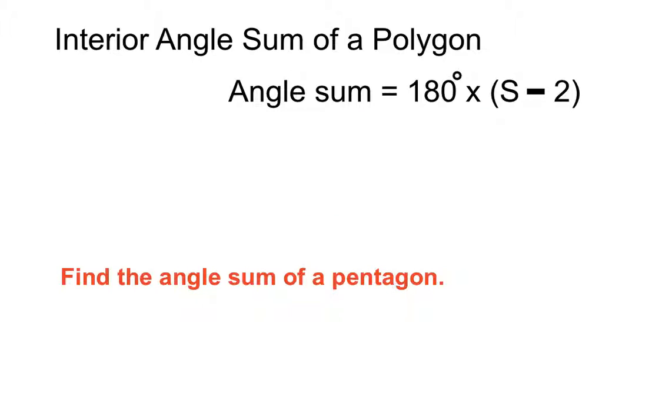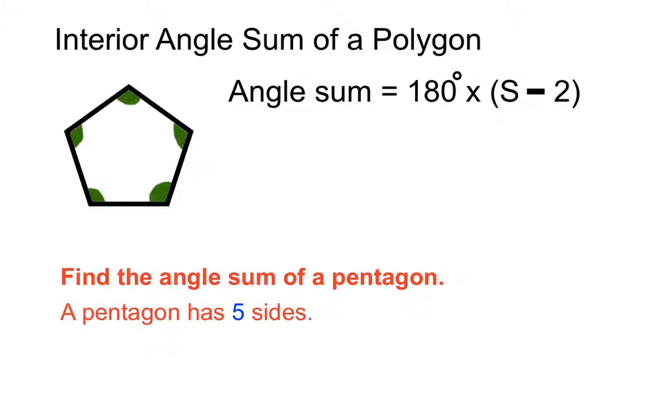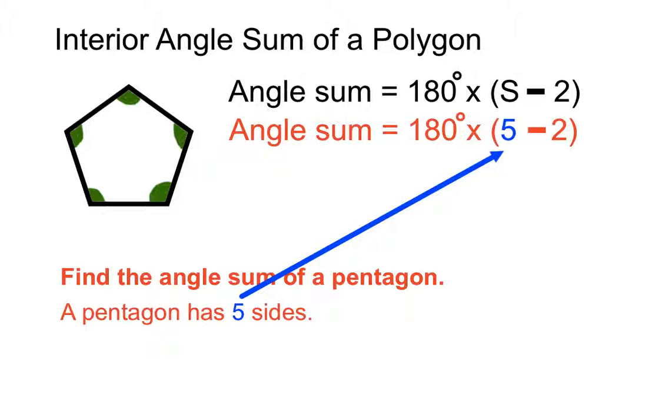Now let's find the angle sum of a pentagon. Let me show you that drawing there that reminds you that there are five sides in a pentagon. So that number five will go in where the s is in our formula now, and we'll calculate based on that. Five minus two in the bracket is three. So we've got an angle sum for a pentagon of three lots of 180 degrees, which I'm here to tell you is 540 degrees.